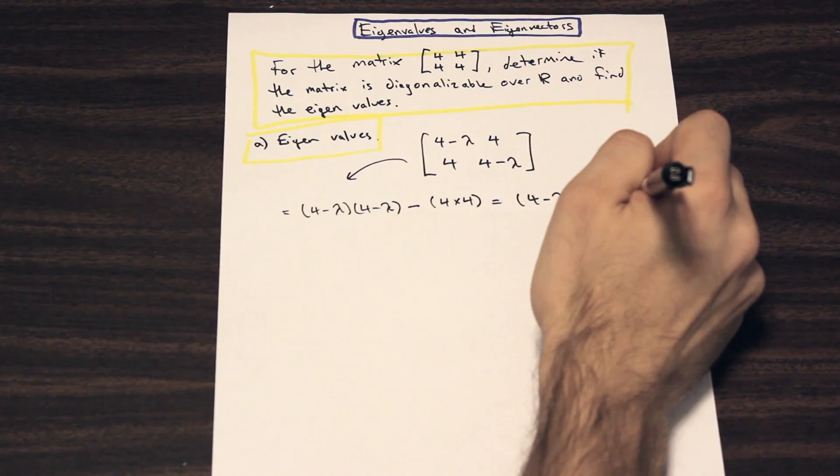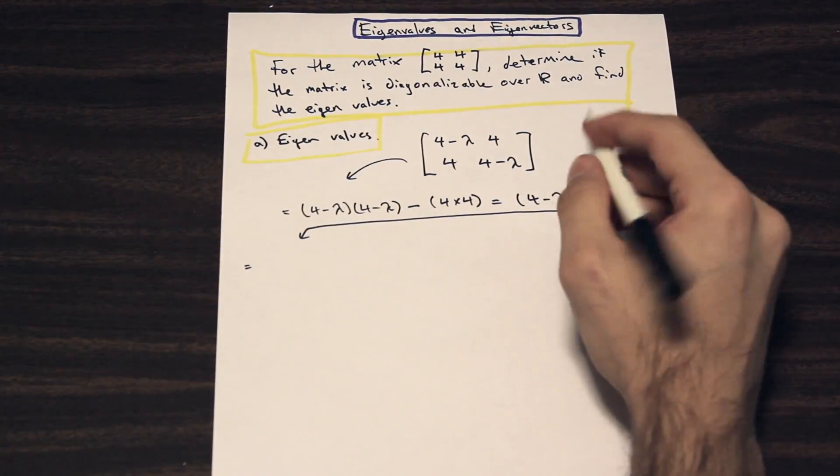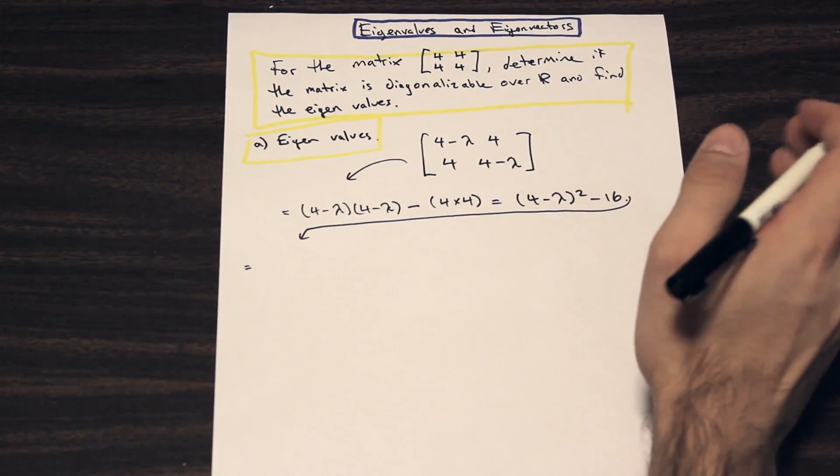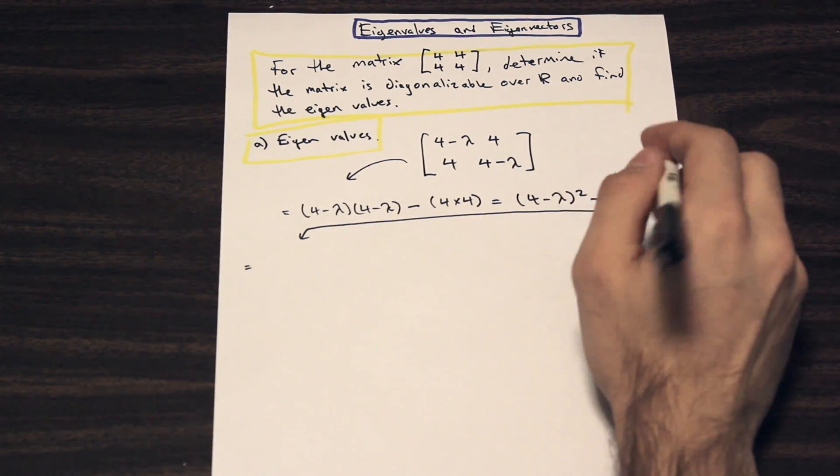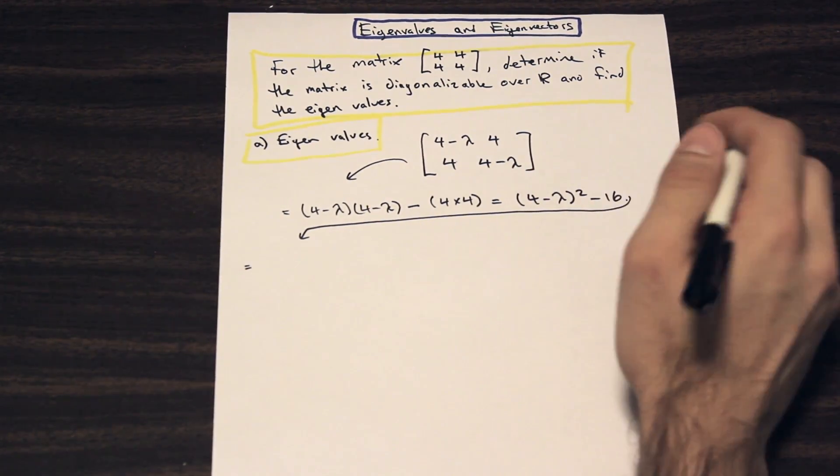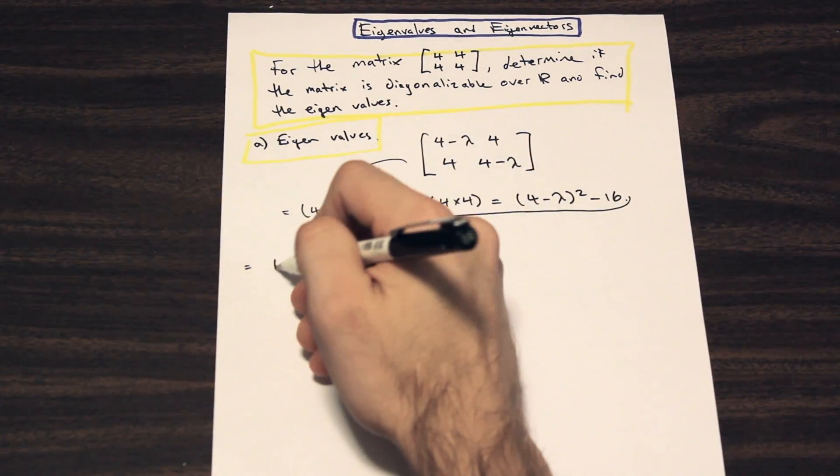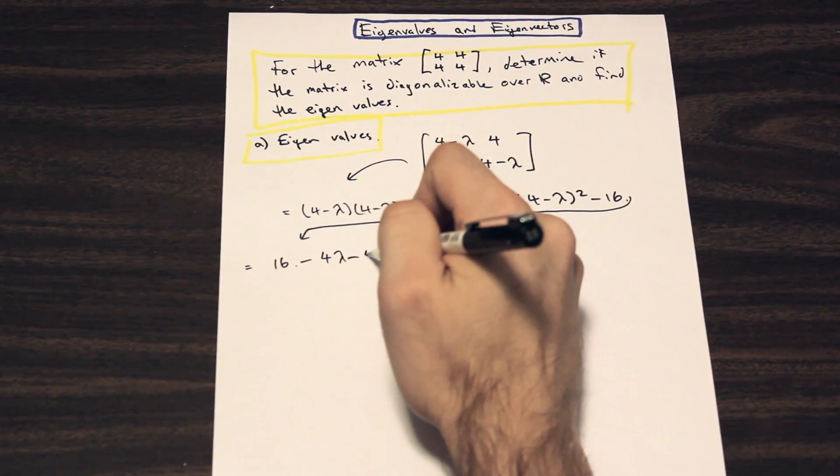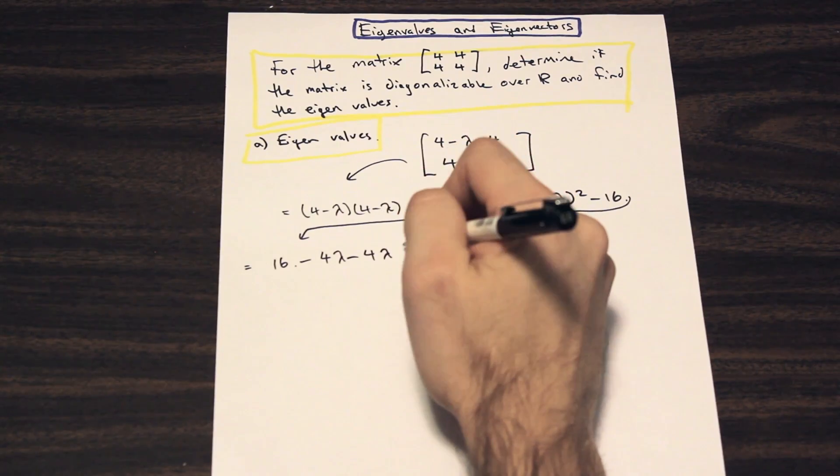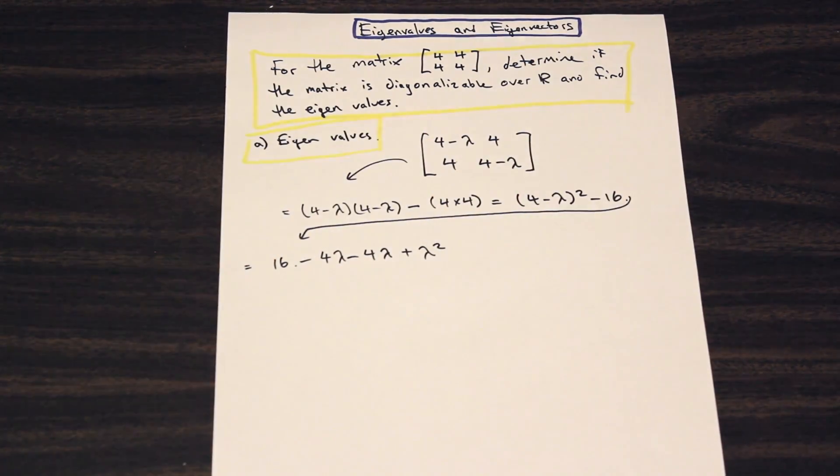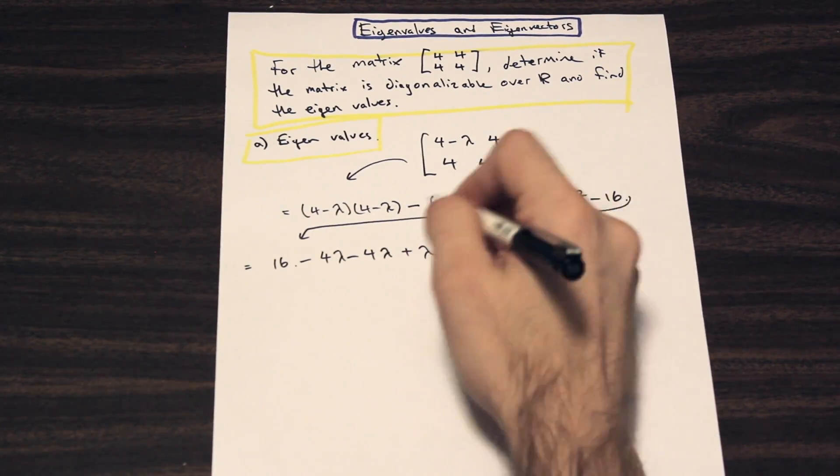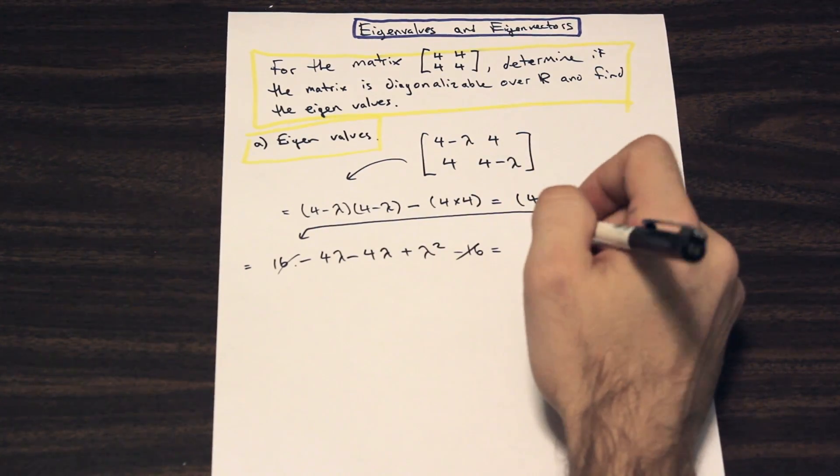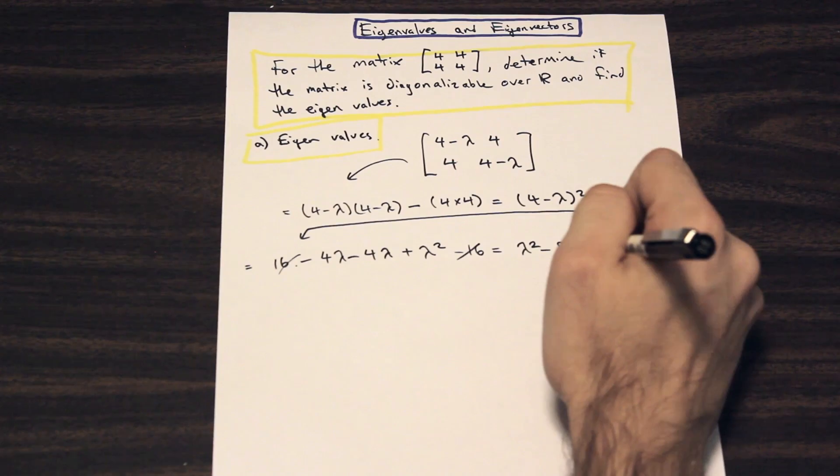If we just bring that down here and continue working, we're going to expand this, factor it, and solve for lambda. That's going to be the first step in finding the eigenvalues. So let's expand this. We have 4 times 4, so we have 16, minus lambda times 4: 4λ minus 4λ, and then we have lambda times lambda, which is plus λ². And we can't forget that we have our negative 16 on the end here.